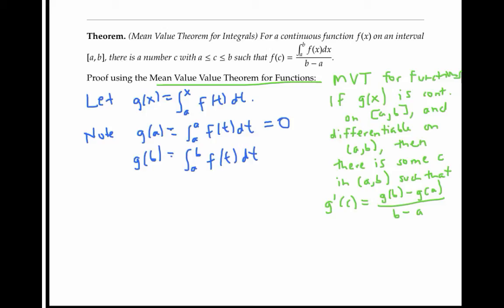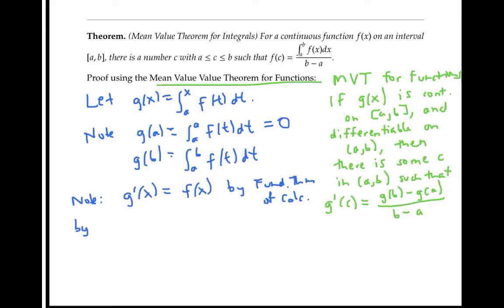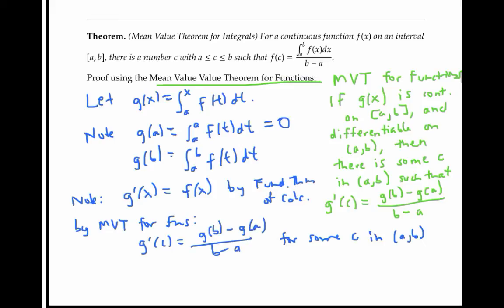Now by the fundamental theorem of calculus, our function G of x is continuous and differentiable on the interval a to b, and G prime of x is equal to f of x. And by the mean value theorem for functions, we know that G prime of c has to equal (G of b minus G of a) over (b minus a) for some number c in the interval a to b.